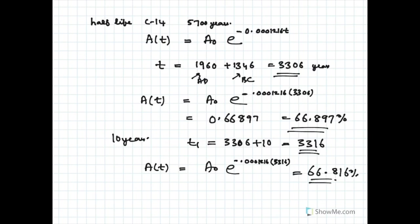So thus, if the piece of art was actually made during King Tut's reign, the percentage of carbon in 1960 should have been between 66.816 to 66.897 percent.